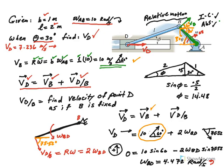I'm going to plug this into the equation — 10 meters per second at 60 degrees. Now, what do we know about velocity of D? I should mention that when we solved this problem using the IC and absolute methods, we already know the answer.